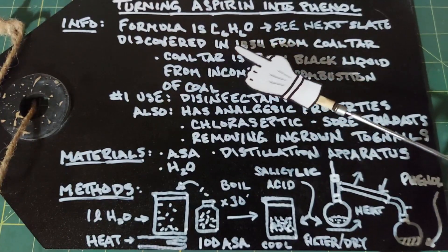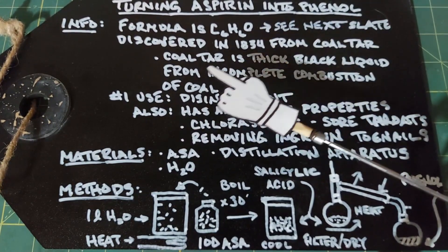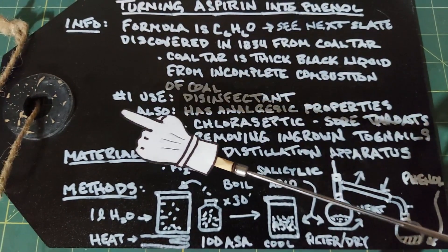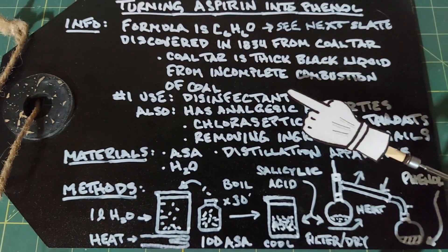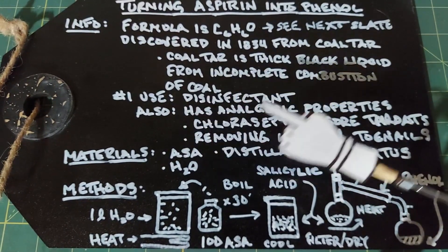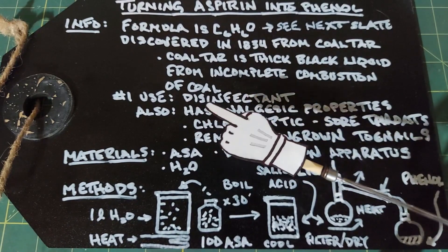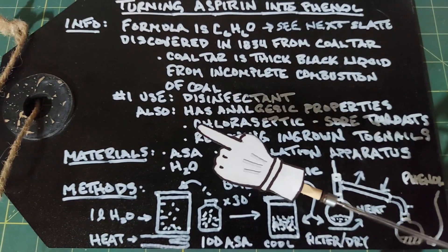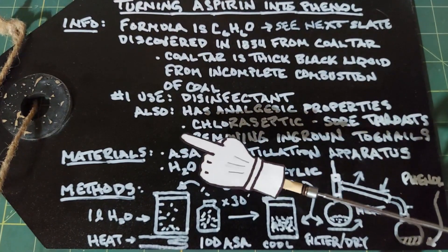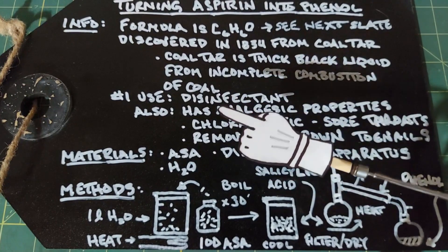Phenol was first discovered in 1834 and was derived from coal tar, a thick black liquid that comes from the incomplete combustion of coal. The number one use of phenol is as a disinfectant, but it also has uses as an analgesic. Chloraseptic, which is a sore throat spray, uses phenol as its primary ingredient to numb your throat. One of the reasons it works well is that it lasts much longer than, say, xylocaine or lidocaine.